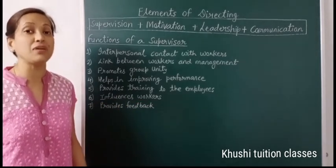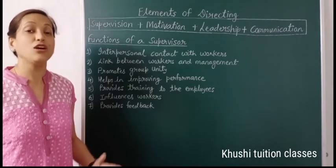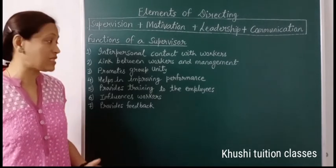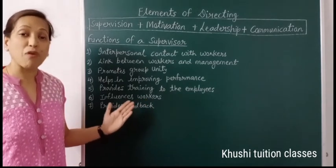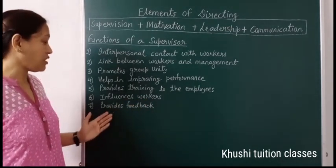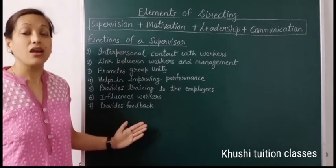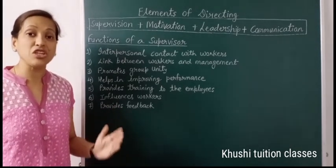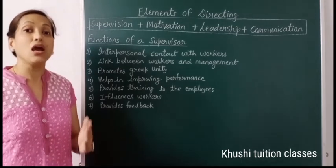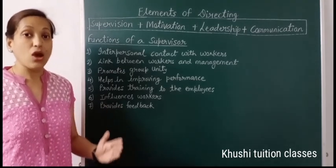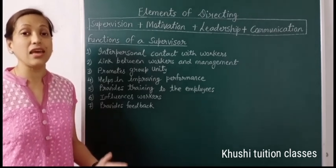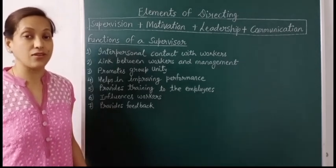The sixth is influences workers. Supervisor अपनी team के लिए role model होता है, तो यह अपने behavior अपनी personality से workers के performance को behavior को influence करते हैं. The seventh is provides feedback. यह supervisor अपनी team को उनके work performance के लिए feedback provide करते हैं, और इस team को skills कैसी improve करने चाहिए, यह भी guide करते हैं.